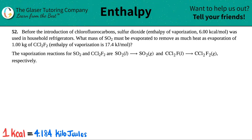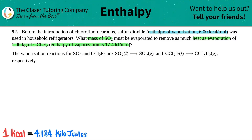Number 52. Before the introduction of chlorofluorocarbons, sulfur dioxide, with its enthalpy of vaporization of 6.00 kilocalories per mole, was used in household refrigerators. What mass of sulfur dioxide, SO2, must be evaporated to remove as much heat as evaporation of 1.00 kilograms of CCl2F2? The enthalpy of vaporization is 17.4 kilojoules per mole. They give us the vaporization equations: SO2 liquid to SO2 gas, and CCl2F2 going from a liquid to a gas.